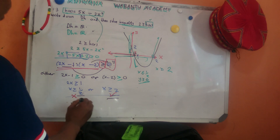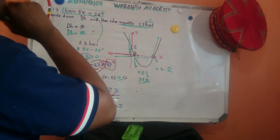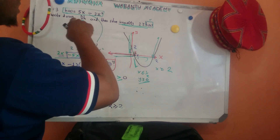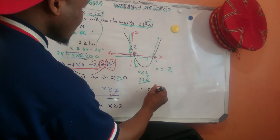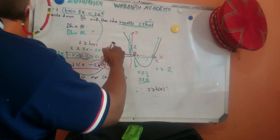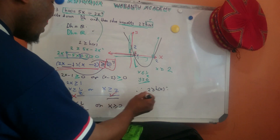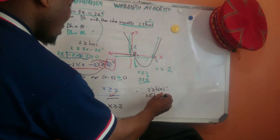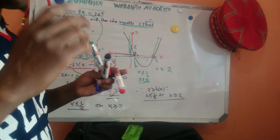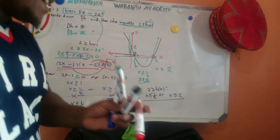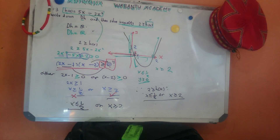So our final answer is: x less than or equal to one half, or x greater than or equal to two. That is the solution to the inequality 2 greater than or equal to h of x. If you're new to my channel, make sure you subscribe, like, and share. Don't forget to click the subscribe and like buttons and share with people. Let's go to the next question — thank you so much for your time, I appreciate it.